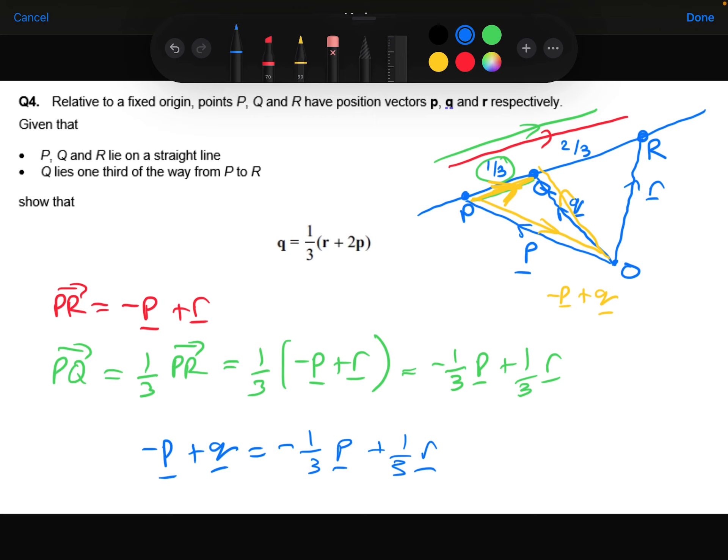So I'm now going to add vector p to both sides. So q equals minus one third p plus p is two thirds p, plus the one third r. If I factorize one third out now, that gives me the answer with what I needed to show. So one third of two p plus r, which is the same thing as that, just written with the r and the p the other way round.